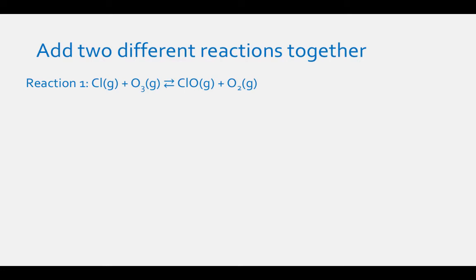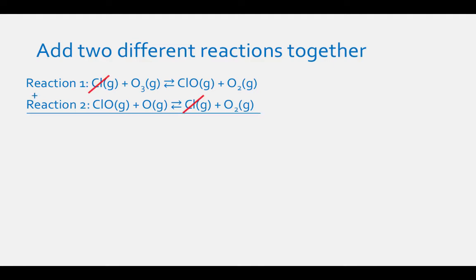What happens to the equilibrium constant expression when we add two different reactions together? For example, reaction one: Cl (gas) plus O3 (gas) in equilibrium with ClO (gas) plus O2 (gas). If you add the reactions together, the ClO gas will cancel because it is on the products of the first equation and the reactants of the second equation. Similarly, the Cl gas cancels as well. You will be left with the equation: O3 (gas) plus O (gas) in equilibrium with 2 O2 (gas).